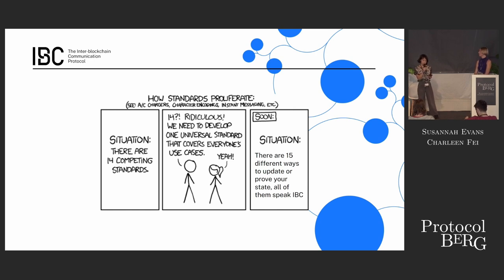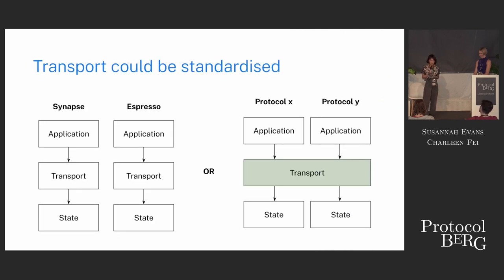The protocol we're working on is IBC. It doesn't have value capture — there's no IBC token, and what we're building doesn't have a total value locked to measure. But we have one primary thesis: the transport layer can be standardized. We really feel that standardization of the transport layer is not only a nice-to-have for interoperability, but it's the key to unlocking so much more in the space of cross-chain or cross-rollup interactions.